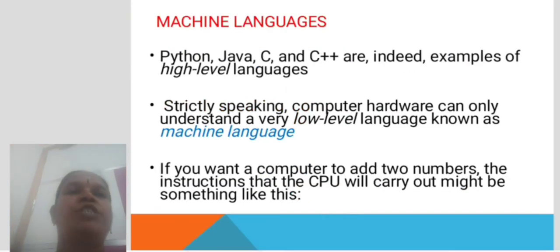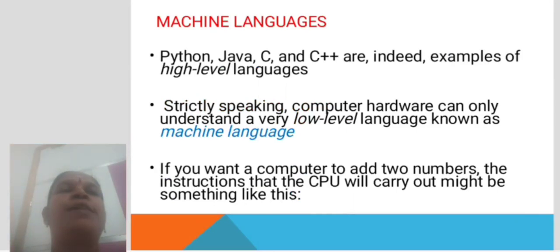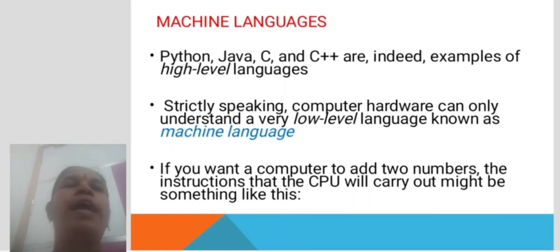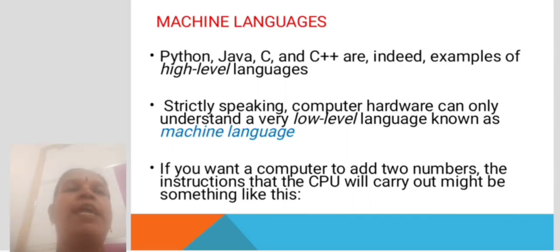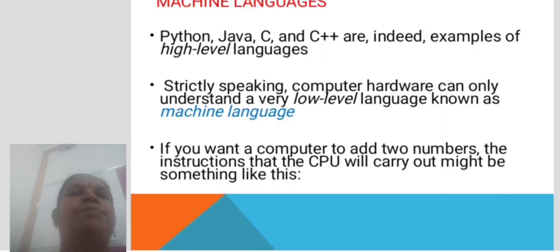Machine Language. Python, Java, C, and C++ are examples of high-level languages. Strictly speaking, computer hardware can only understand a very low-level language known as machine-level language. If you want the computer to add two numbers, the instruction that the CPU will carry out might look something like this.